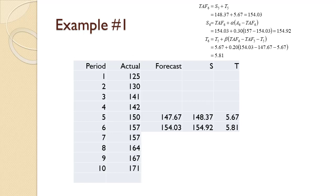taf sub 6 equals s5 plus t5 equals 148.37 plus 5.67 equals 154.03. s sub 6 equals taf sub 6 plus alpha times the quantity a6 minus taf sub 6 equals 154.03 plus 0.30 times the quantity 157 minus 154.03 equals 154.92. t6 equals t5 plus beta times the quantity taf sub 6 minus taf sub 5 minus t5 equals 5.67 plus 0.20 times the quantity 154.03 minus 147.67 minus 5.67 equals 5.81. taf sub 7 equals s6 plus t6 equals 154.92 plus 5.81 equals 160.73.